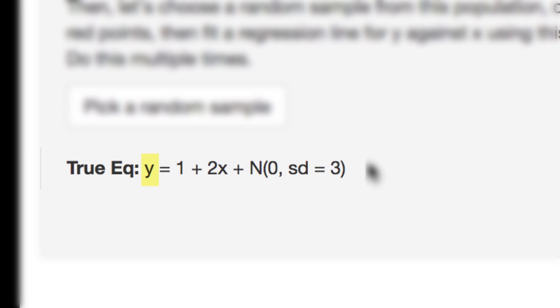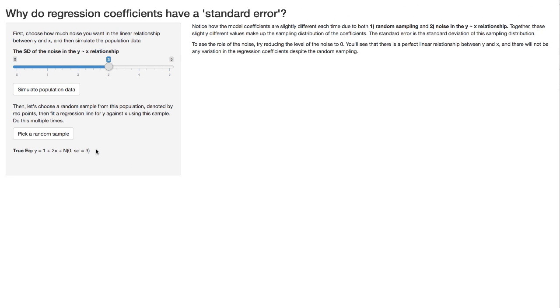So we're predicting the outcome y from a predictive variable x, and the beta 0 or intercept is 1 and the beta 1 or the gradient is 2. So that's the true parameters, 1 and 2, and we're going to focus on the gradient, so the 2 in that equation.